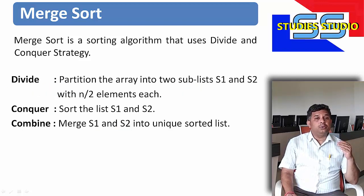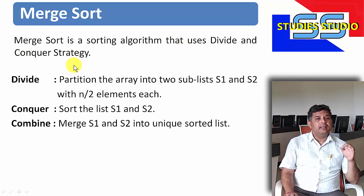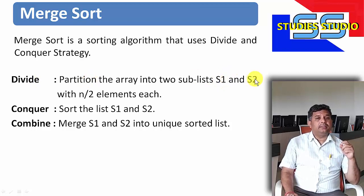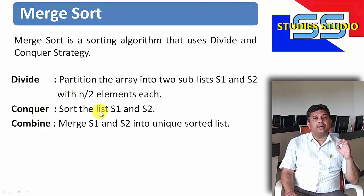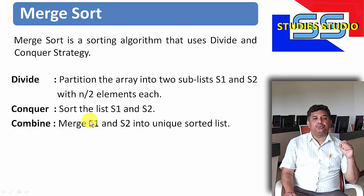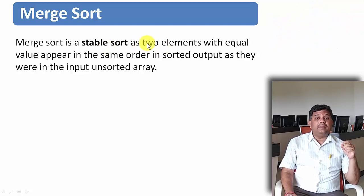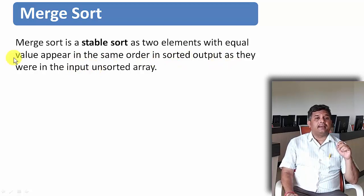Merge sort is an algorithm that uses the divide and conquer strategy. There are three steps: first, divide — partition the array into two sublists S1 and S2 with n/2 elements each. Then conquer — sort the lists S1 and S2. The last step is combine — merge S1 and S2 into a unique sorted list. Merge sort is known as a stable sort, as two elements of equal value appear in the same order in the sorted output as they were in the input unsorted array.